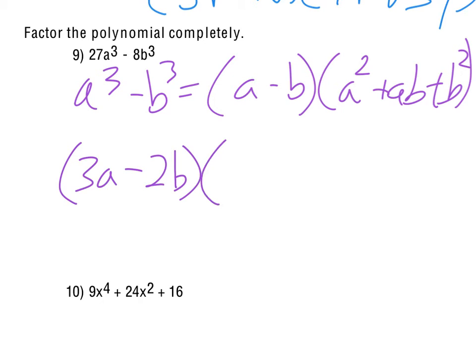So to get my trinomial, I start by squaring the 3a. So that goes here. That will give me 9a². The next term is the product of the 3a and the 2b. So we get 6ab. And then we square the 2b. It goes over here. And that gives us the 4b². And that's all we can do to factor that one.